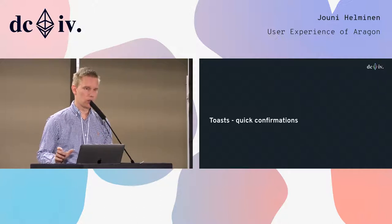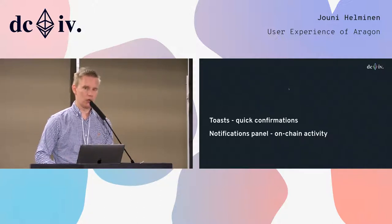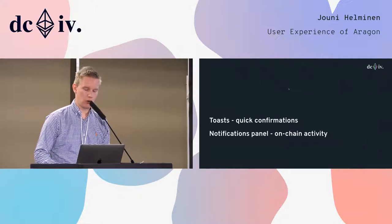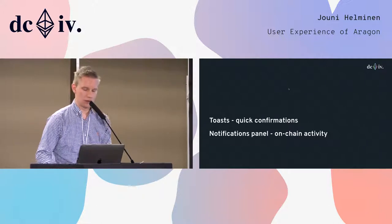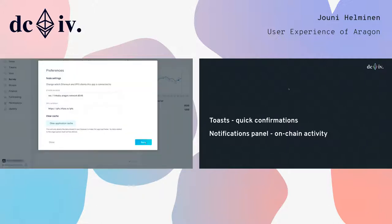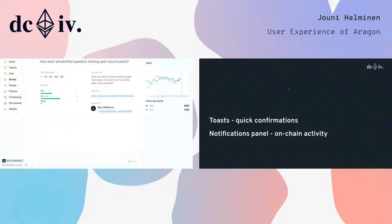Things like toasts that we could use for quick confirmations and notifications for on-chain activity. I'll show you an example of the toast component we're building right now. When you have quick interactions, you usually want to confirm to the user that what they just did has actually happened — something's happened with it.